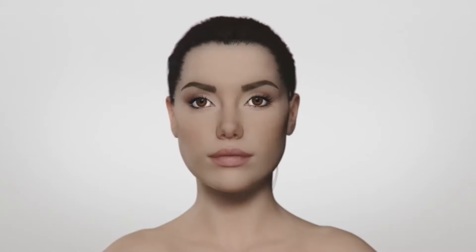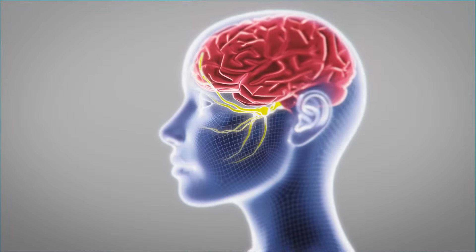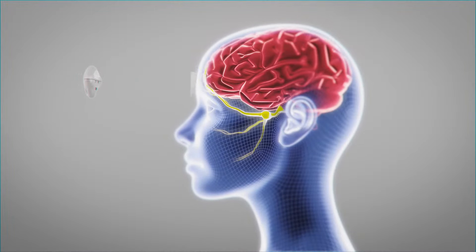The Cephaly method works on the trigeminal nerve. The main branch of the trigeminal nerve circles through the front of the head. This is where Cephaly neurostimulation is applied.